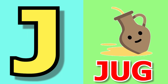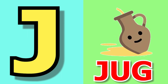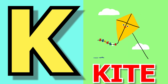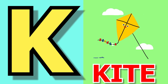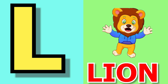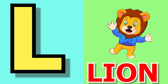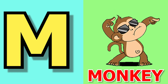J for jug, jug means jug. K for kite, kite means patang. L for lion, lion means sher.